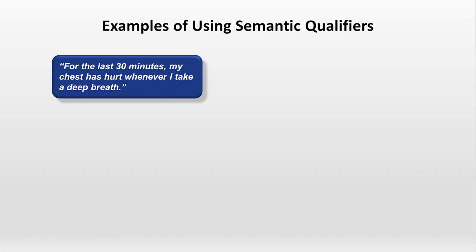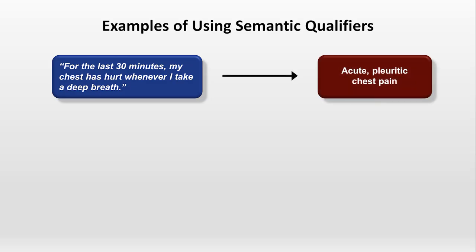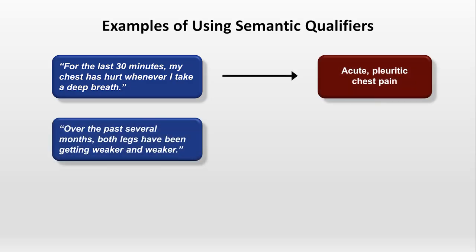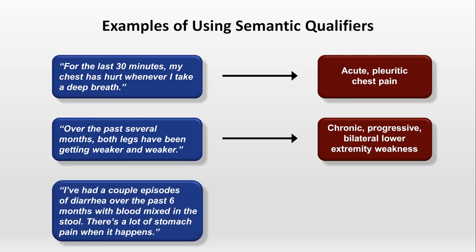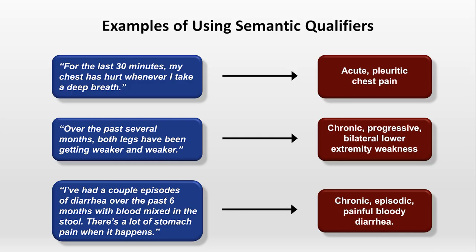How might we use these qualifiers to more concisely summarize symptoms? Imagine a patient who reports, 'For the last 30 minutes, my chest has hurt whenever I take a deep breath.' That becomes acute pleuritic chest pain. 'Over the past several months, both legs have been getting weaker and weaker' becomes chronic progressive bilateral lower extremity weakness. And 'I've had a couple episodes of diarrhea over the past six months with blood mixed in the stool, and there's a lot of stomach pain when it happens' becomes chronic, episodic, painful bloody diarrhea.